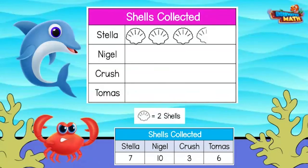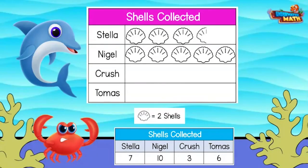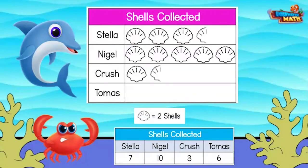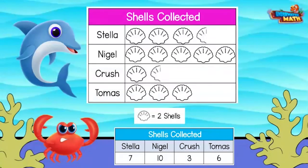I found an odd number of shells, so I am going to have to use a half shell this time. One shell is worth two, then I add a half shell to make three. Tomas found six: two, four, six. There we have it — the data you collected is now represented on the pictograph!